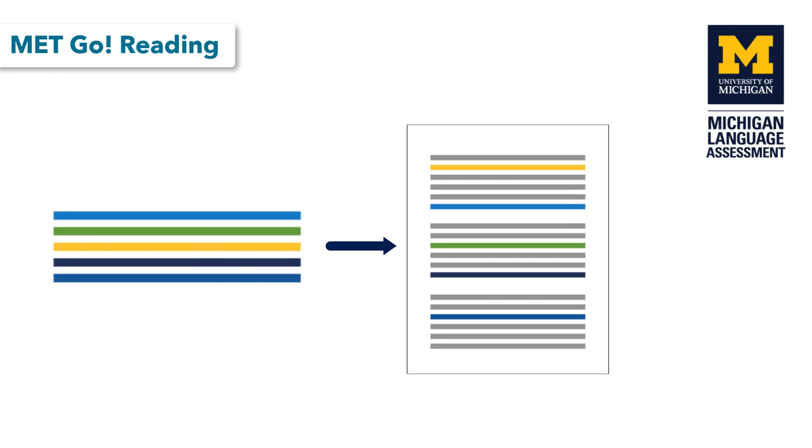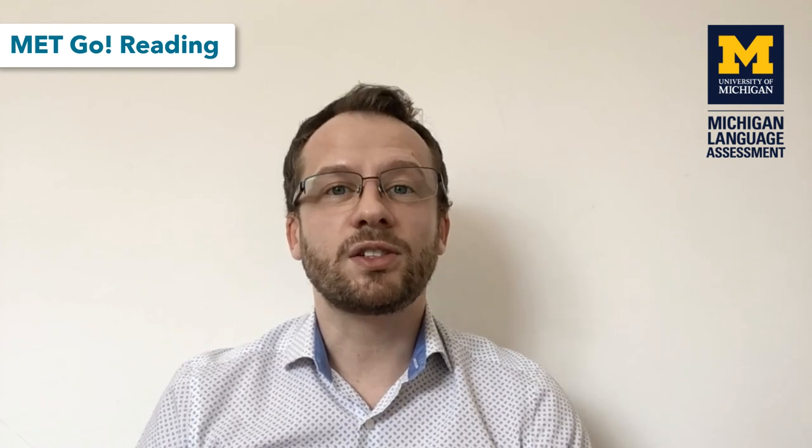You could also produce some comprehension questions for after that stage, so once they've completed the text they answer questions about it. Or, if you want to practice creating questions, you can get students to create comprehension questions about the text to ask other students in the class. These are just some examples of activities you can do to help your students prepare for the METGO reading section.